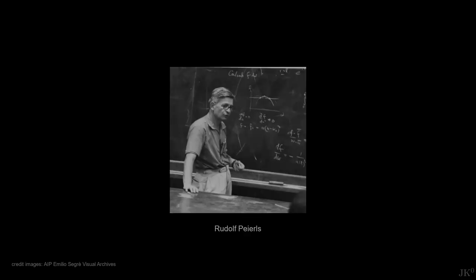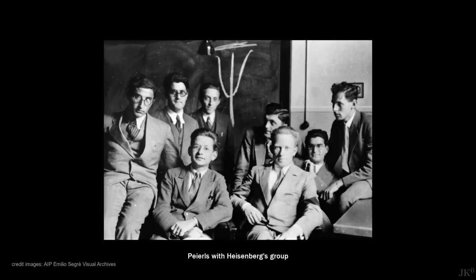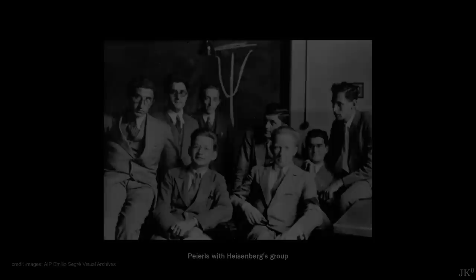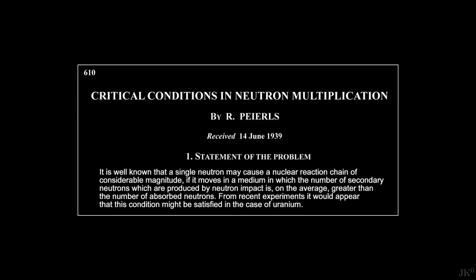Born and educated in Germany, Peierls moved to Britain when Hitler came to power. In the summer of 1939, he was a professor at the University of Birmingham, when he wrote a brief article titled Critical Conditions in Neutron Multiplication, setting the basis for the complete calculation of a critical mass by improving and generalizing the result by Perrin.